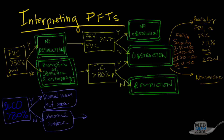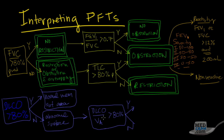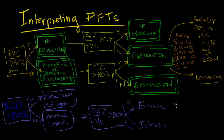The next thing to look at is the DLCO divided by the alveolar ventilation, and if it is greater than 80% of predicted, this is a distinguishing characteristic between extrinsic and intrinsic lung disease. If yes, it would be extrinsic — for example, scoliosis or Guillain-Barré syndrome. If no, it would be intrinsic — for example, pulmonary fibrosis or COPD.